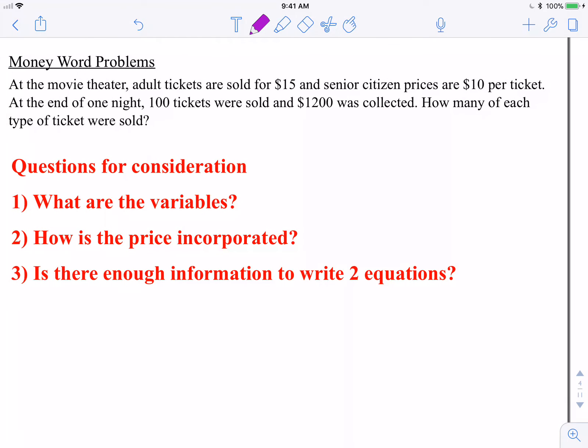So this is what we're referring to when I say money word problems. So we've seen this in the past. It says, at the movie theater adult tickets are sold for $15. This classic scenario with different types of tickets and you don't know how many of each type and you have different amounts and things like that. Adult tickets are sold for $15, senior citizen prices are $10 per ticket. At the end of one night, 100 tickets were sold and $1,200 was collected. How many of each type of ticket was sold?